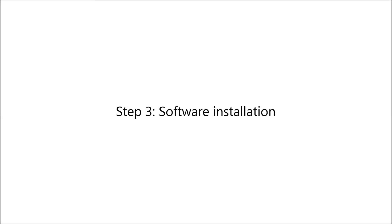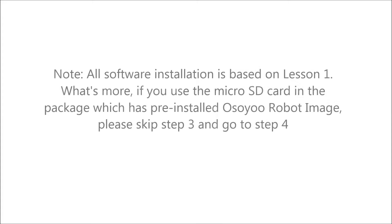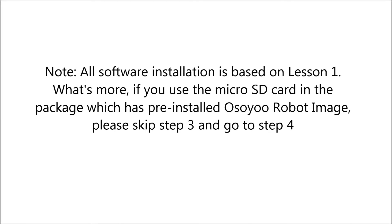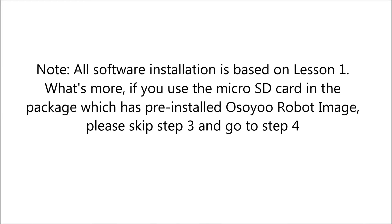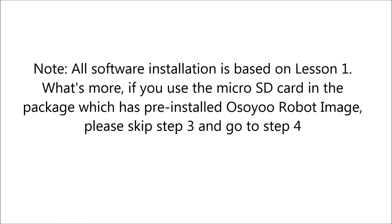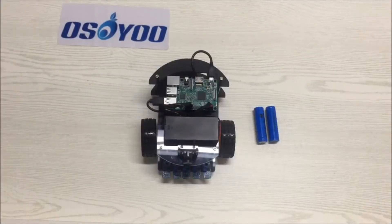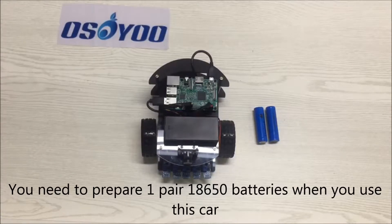Step 3 – Software Installation. All software installation is based on Lesson 1. If you use the micro SD card in the package which has the pre-installed OSIO robot image, please skip Step 3 and go to Step 4. You need to prepare one pair of 18650 batteries when you use this car.